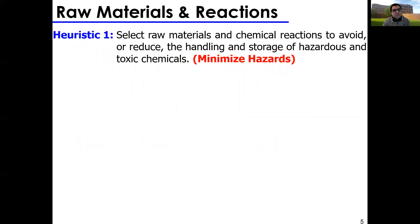Heuristic number one: you should always select raw materials and chemical reactions to avoid or reduce the handling and storage of hazardous and toxic chemicals. If you have the chance to avoid a hazardous or toxic chemical by following another reaction pathway, take the safer pathway. This makes your process easier to control — you don't need to worry about explosions or releases.